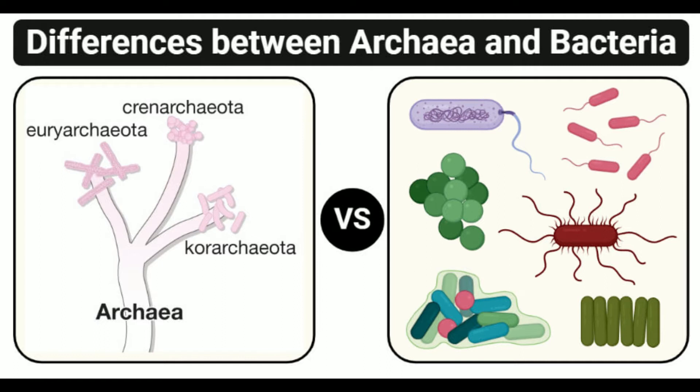Cell wall: The archaeal cell wall is made up of pseudopeptidoglycan, lacking D-amino acids and N-acetylmuramic acid. The bacterial cell wall is made up of peptidoglycan consisting of N-acetylmuramic acid and D-amino acids. Membrane lipid: The fatty acids in archaeal membrane lipids are bound to glycerol by ether bonds, whereas in bacteria they are bound by ester bonds.